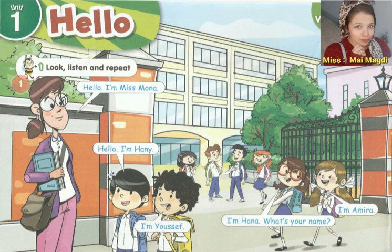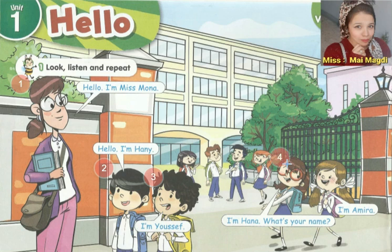Number two, Hany replies: Hello, I am Hany. Number three, I am Yusuf. أنا Yusuf. Number four, Hany is introducing herself to her classmates. She says: I am Hany. What's your name? أنا Hany، اسمك إيه؟ Amira replies: I am Amira.